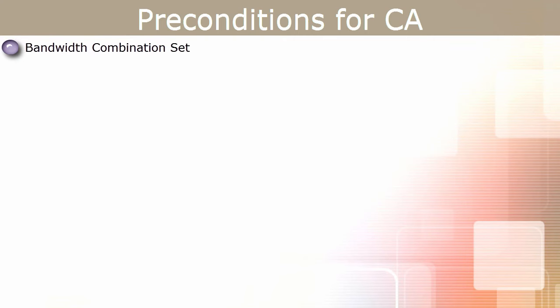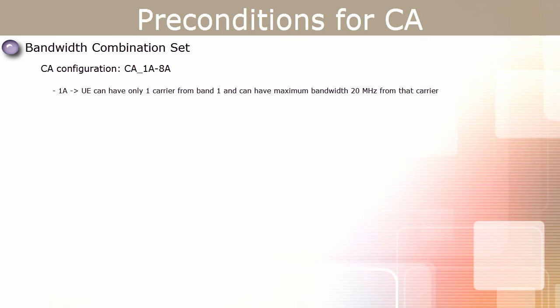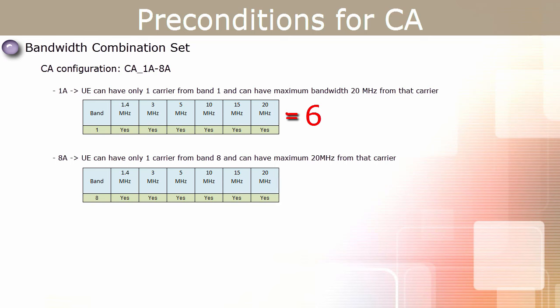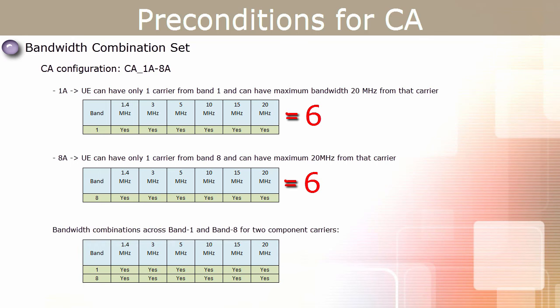To understand this concept further, let's consider CA configuration CA1A8A. Here, 1A means the UE can have only one carrier from band 1 with a maximum bandwidth of 20 MHz, giving 6 possible bandwidth values. Similarly, 8A means one carrier from band 8 with a maximum of 20 MHz — also 6 possible bandwidth values. Mathematically, there could be 36 possible combinations of bandwidth allocation across these two bands. Therefore, 3GPP has defined all the valid bandwidth combinations for all possible CA configurations.